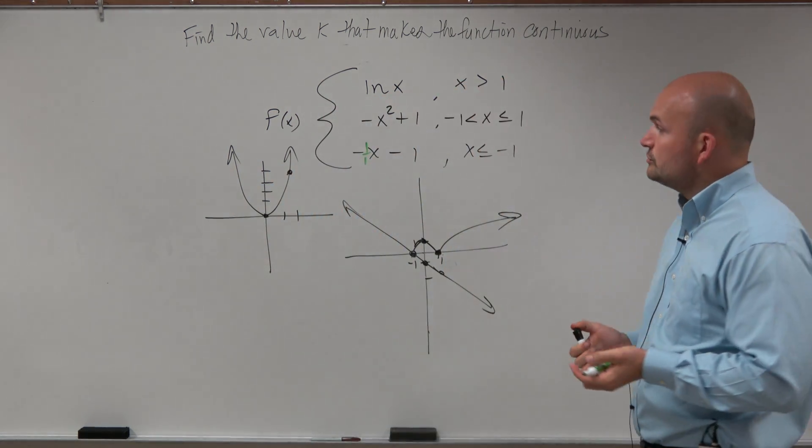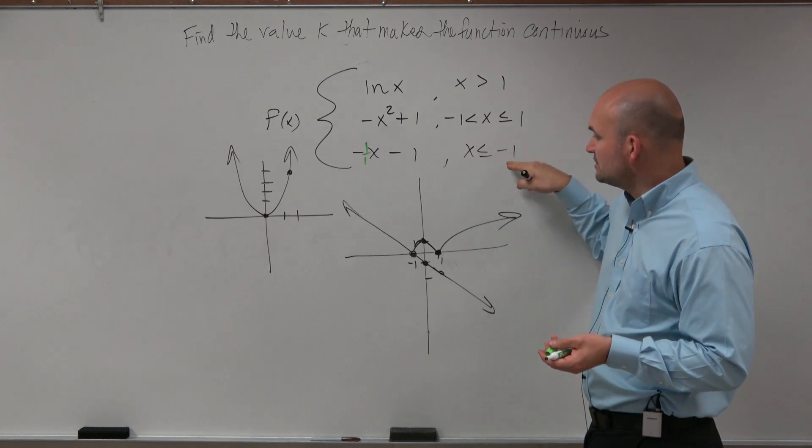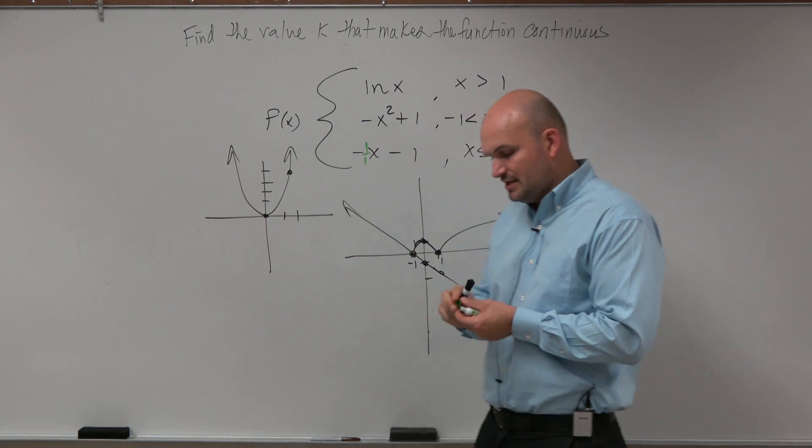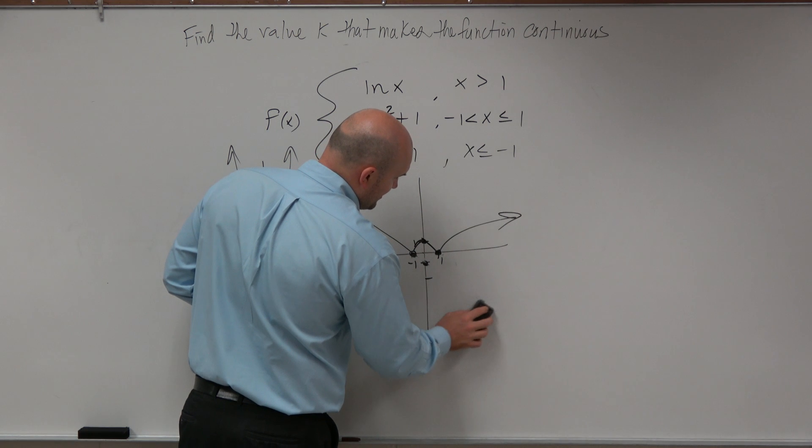And then, we look at the restriction. It says only graph this function for x is less than or equal to negative 1. So here's negative 1. All values that are less than negative 1 are to the left. That means anything to the right is going to be deleted. So I go ahead and erase the rest of this.